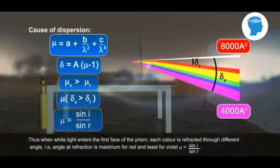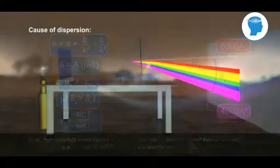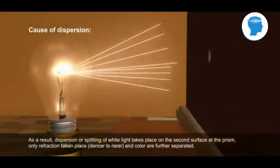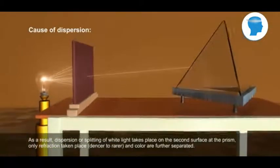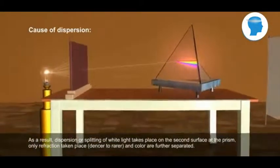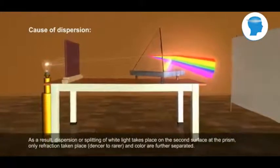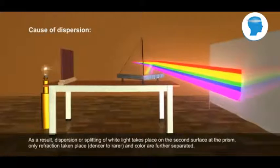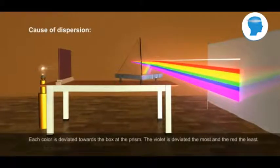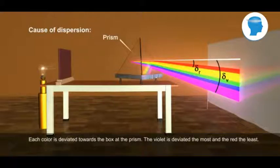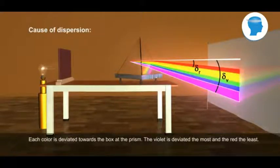When white light enters the first face of the prism, each colour is refracted through different angle. Angle of refraction is maximum for red and least for violet, μ = sin i / sin r. As a result, dispersion or splitting of white light takes place on the second surface of the prism. Only refraction takes place, and colours are further separated. Each colour is deviated towards the base of the prism. The violet is deviated the most and the red the least.